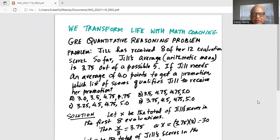Jill has received 8 of her 12 evaluation scores. So far Jill's average, which is arithmetic mean, is 3.75 out of a possible 5. If Jill needs an average of 4.0 points to get a promotion, which list of scores qualifies Jill to receive her promotion?